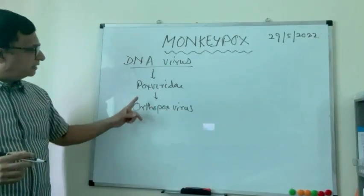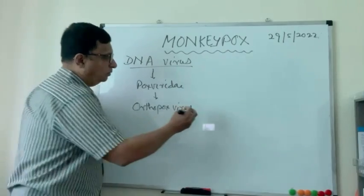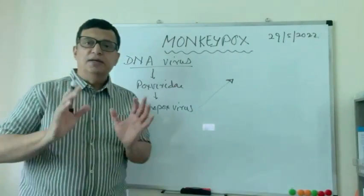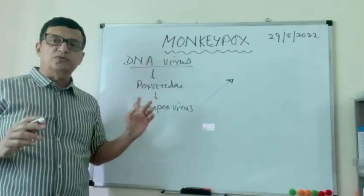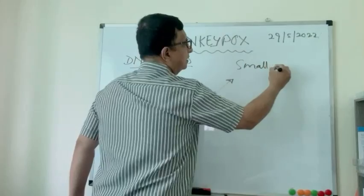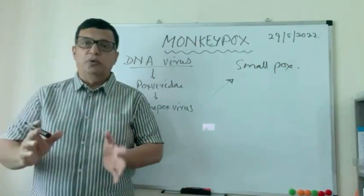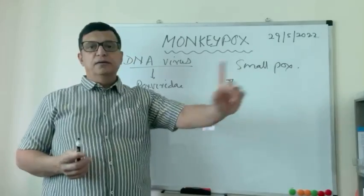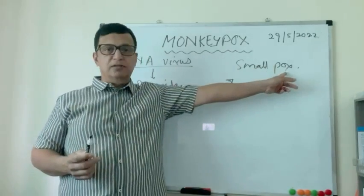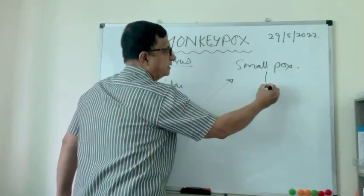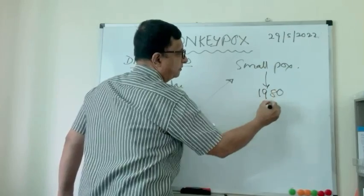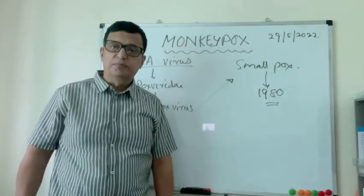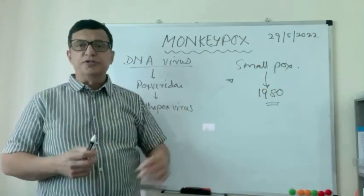This is a Poxviridae group virus, in the subgroup of orthopoxvirus. The most dangerous orthopoxvirus we have encountered was smallpox. Smallpox was a very big threat to the world, but when Sir Edward Jenner found the vaccine, it was eradicated globally by 1980. About 30 percent of the world population still has immunity to smallpox due to vaccination.